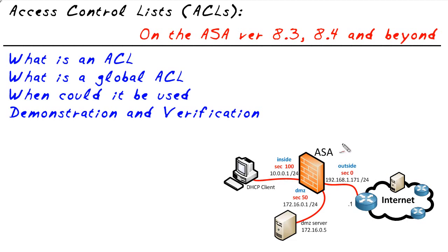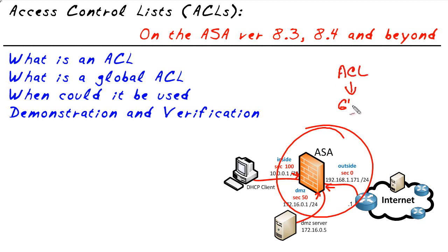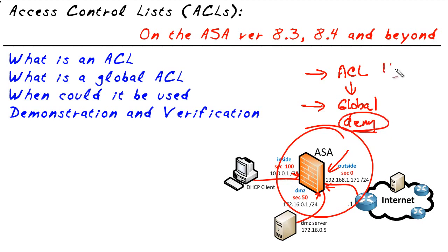The global ACL applies logically to the entire box. If there are any ACLs already on interfaces, those are considered first for inbound traffic. Then instead of having the default deny-any implied at the end, after the access list on the interfaces is processed, we're kicked over to the global ACL. So a user coming in on the outside interface — if there is an ACL, it's checked first, then the global ACL is checked, and then there's an implied deny at the very end of the global. If there's no matches in all entries combined, then there's the implied deny. You can have interface ACLs if you want them, plus a global ACL.